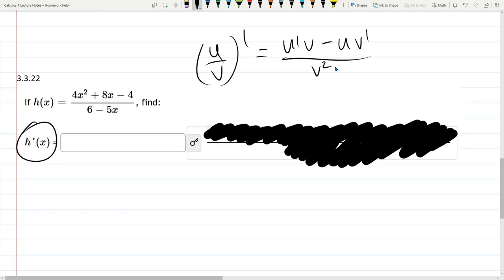Never write first powers in calculus if you can avoid it. So we have u on the top and v on the bottom. So I'm just going to start by rewriting this: 4x squared plus 8x minus 4 divided by 6 minus 5x.